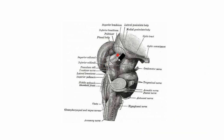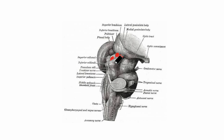Next, let's look at the lateral geniculate body. This is also a small oval elevation situated anterolateral to the medial geniculate body. It lies below the thalamus and is overlapped by the medial part of the temporal lobe of the cerebral cortex. It is connected to the superior colliculus by the superior brachium, as you can see right here. The lateral geniculate body has afferent and efferent connections.